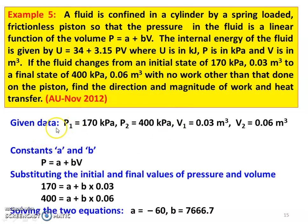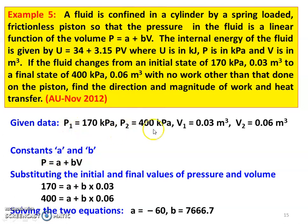Writing the given data: P1 equal to 170 kilopascal, P2 equal to 400 kilopascal, V1 equal to 0.03 meter cube, V2 equal to 0.06 meter cube. The pressure changes by the equation P equal to A plus BV. We have to calculate the constants A and B. Substituting inlet conditions: 170 equal to A plus B into 0.03. For final conditions: 400 equal to A plus B into 0.06. Solving these two equations simultaneously, A equal to minus 60 and B equal to 7,666.7.